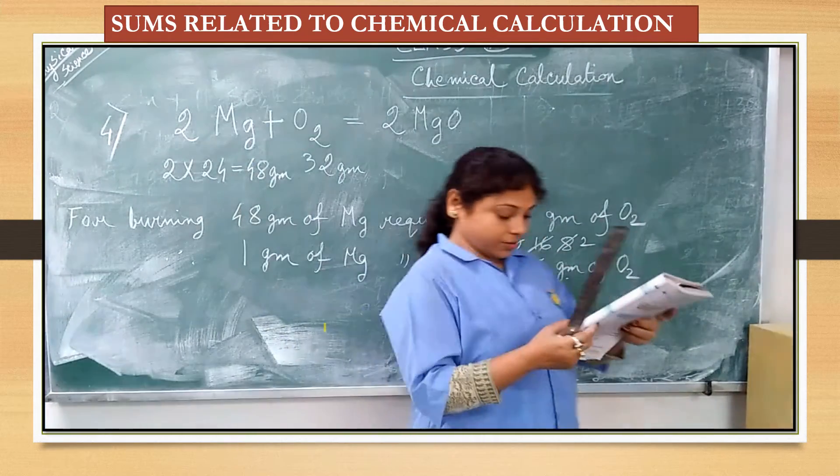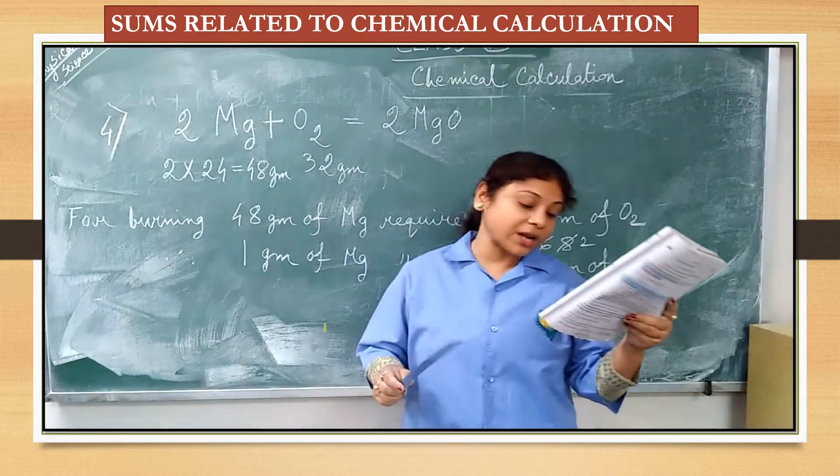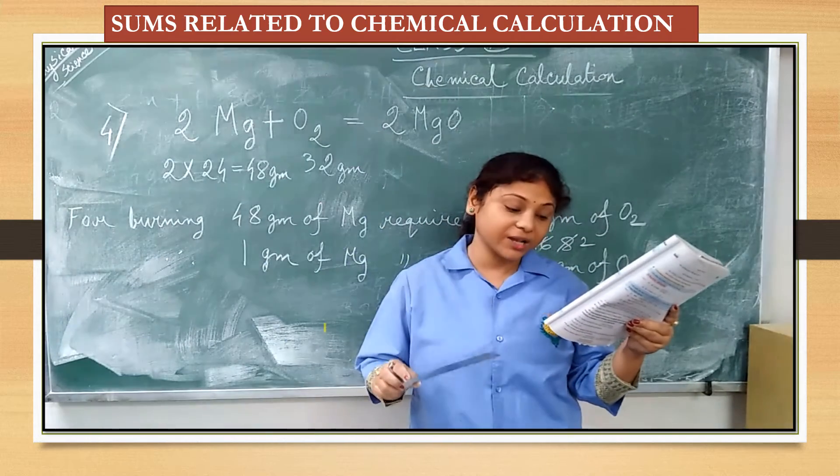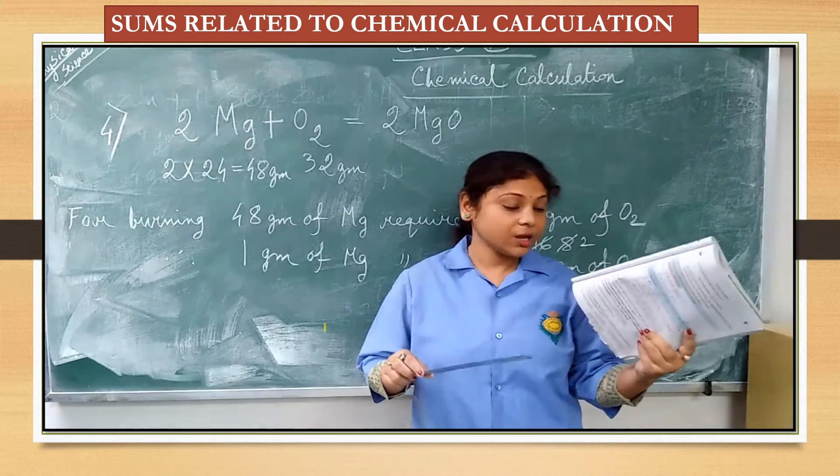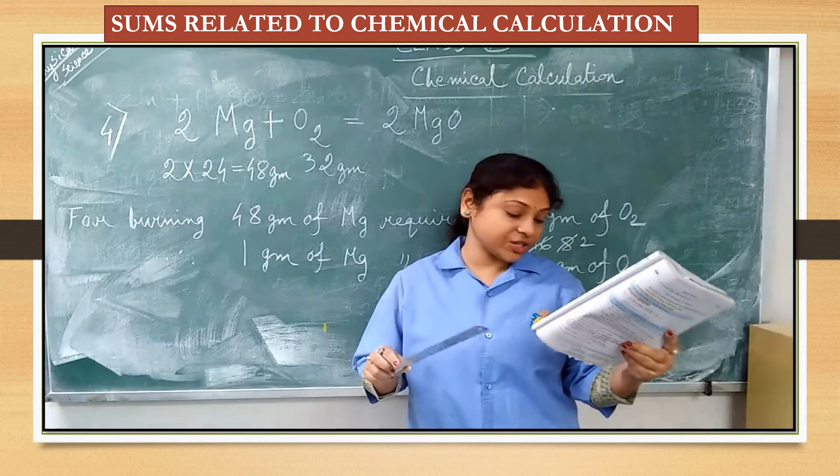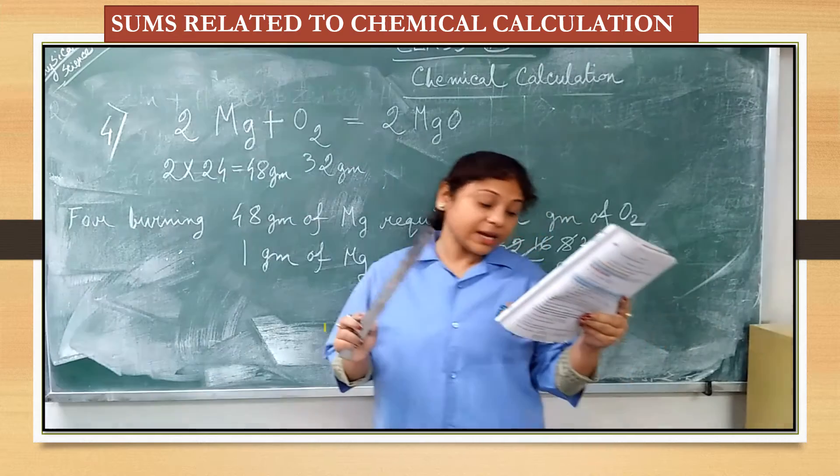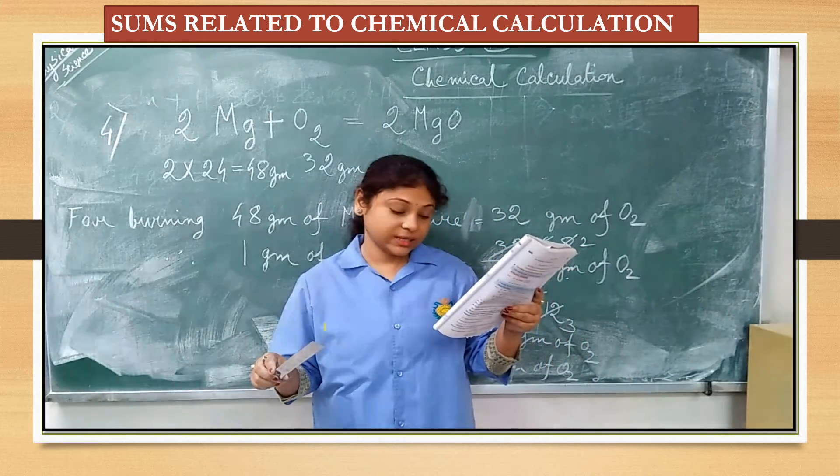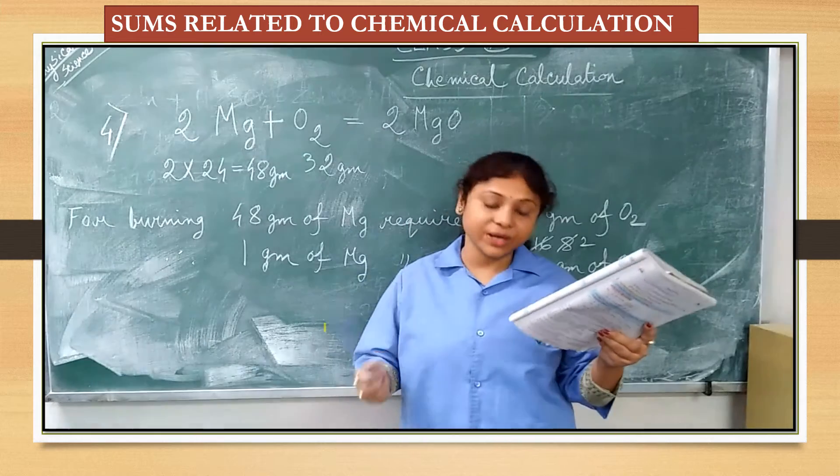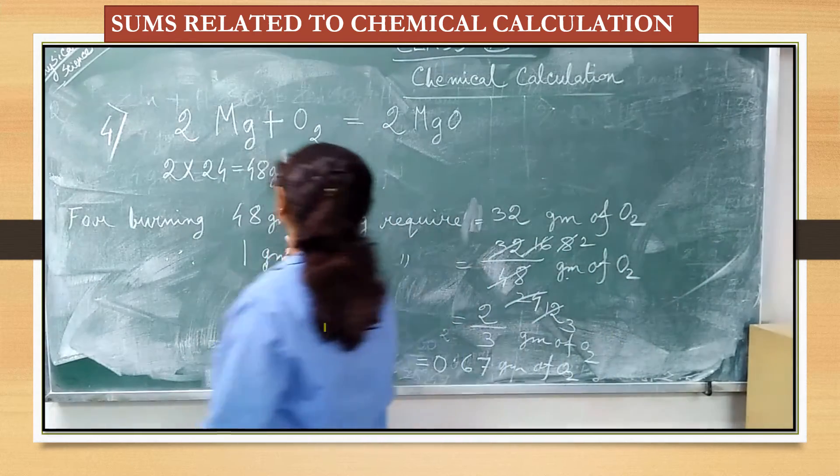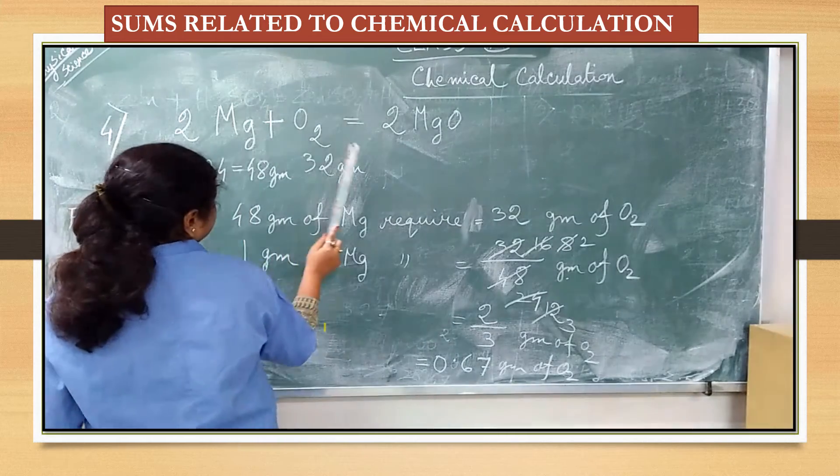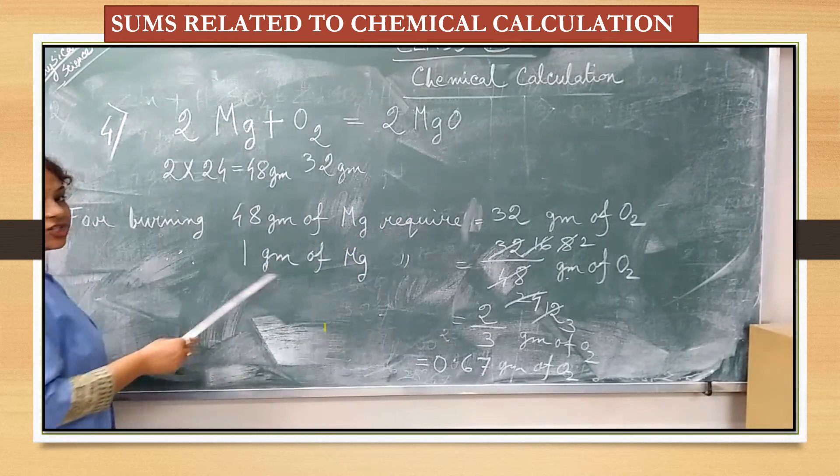Now, question number 4. In a closed vessel, 1 gram of magnesium is burned with 0.5 gram of oxygen. Which reactant remains in excess? Magnesium or oxygen? Which one will be the excess? So, first write down the equation: 2Mg plus O2 is equal to 2MgO, that is magnesium oxide.